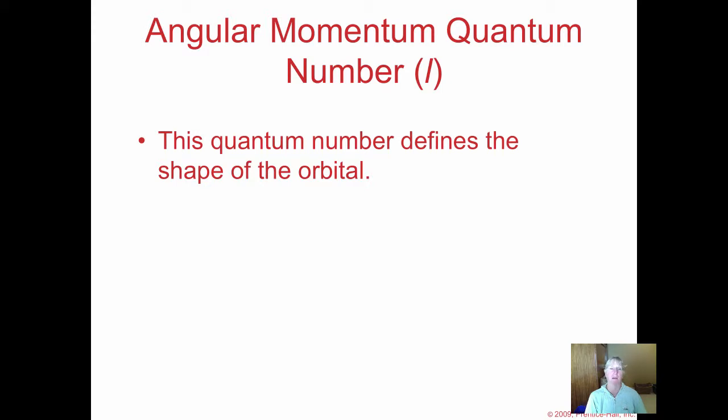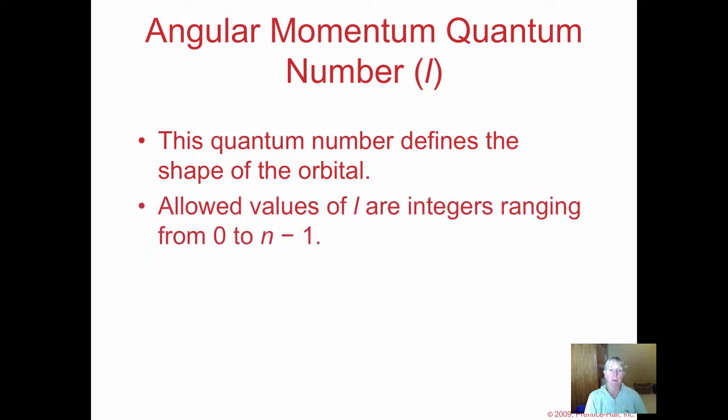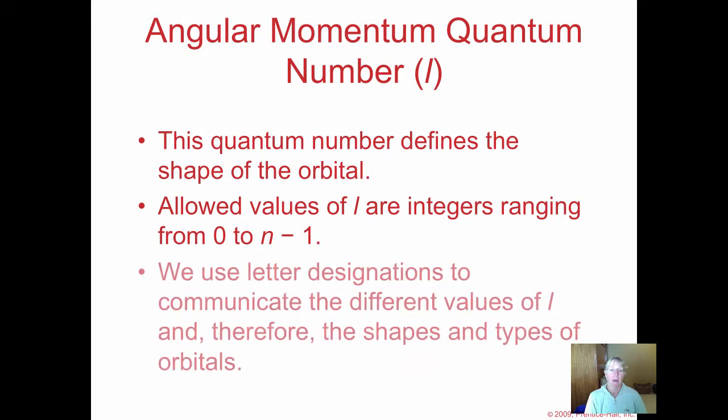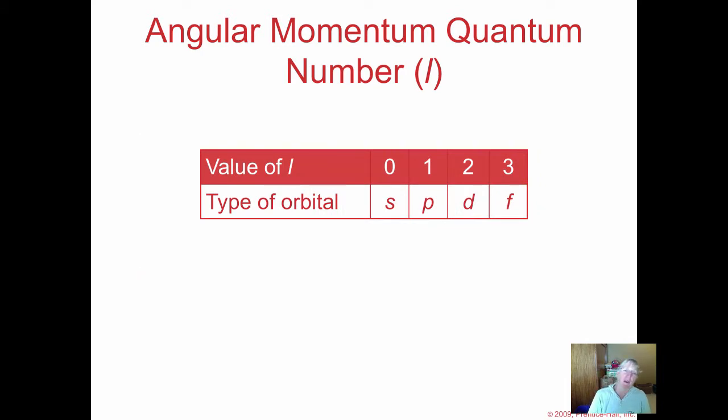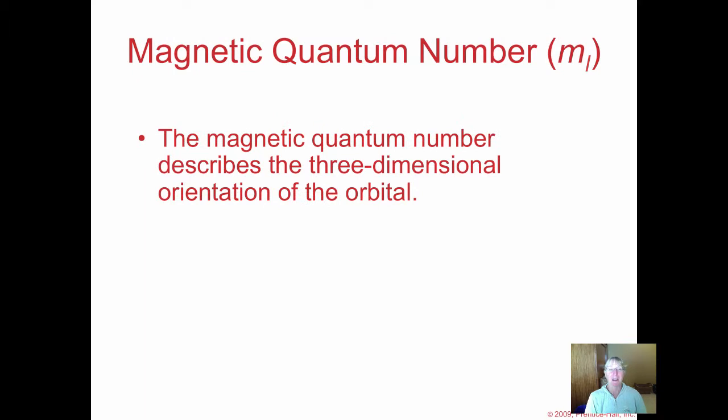The angular momentum quantum number, or the l value, describes the shape of the orbital. We call them quantum numbers but use letters to designate the shape. If l equals zero, we have s or spherical orbitals. One corresponds to p or dumbbell orbitals. Two gives d orbitals or double dumbbells. Three gives f orbitals. This comes from old terminology: sharp, principle, diffuse, and fundamental.